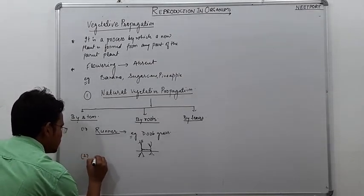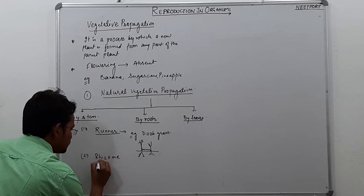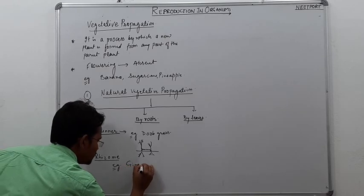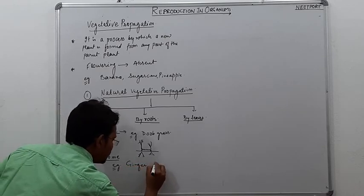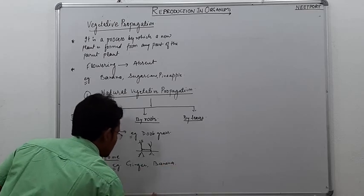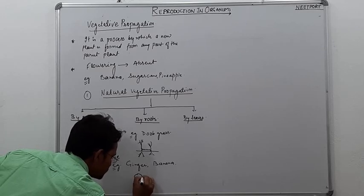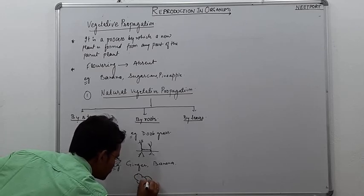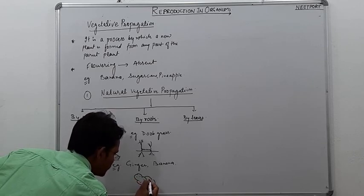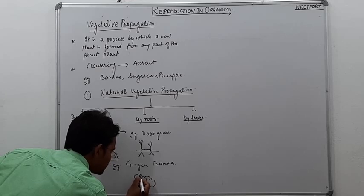The second type is rhizome. This is an example of ginger and banana. If you look at this type of structure, there are little buds which we call nodes, and these nodes form adventitious roots.